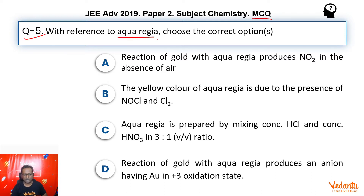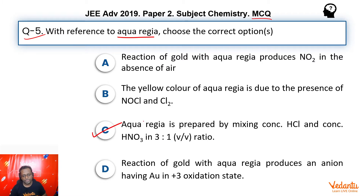Let's try and see the easiest one first. This one talks about a reaction, this one talks about a yellow color, the third one talks about composition made by mixing HCl and HNO₃ in 3:1 ratio — this is definitely correct.